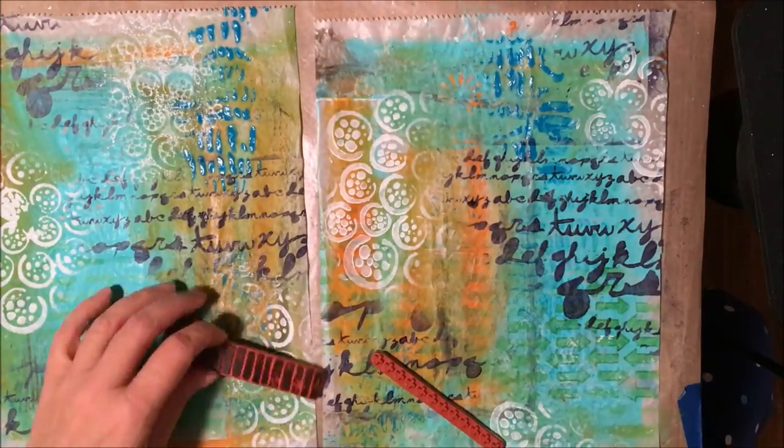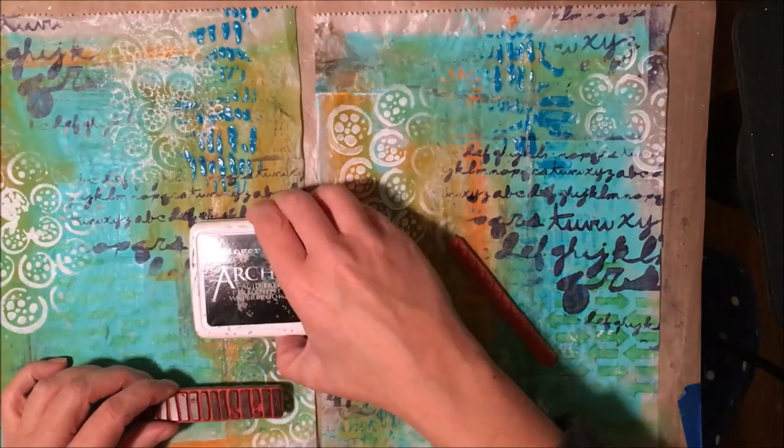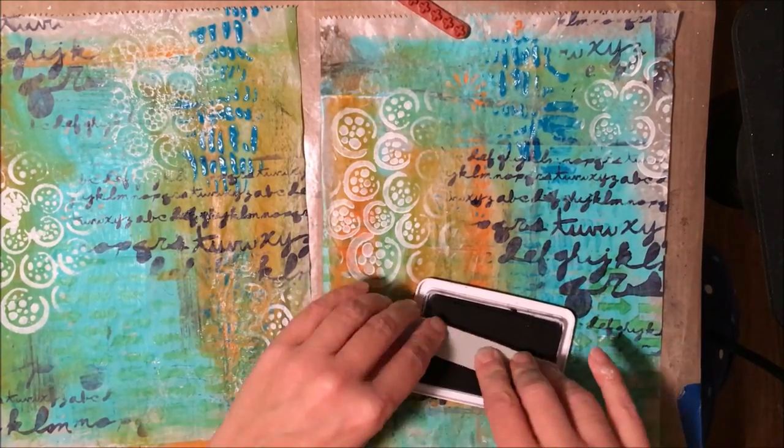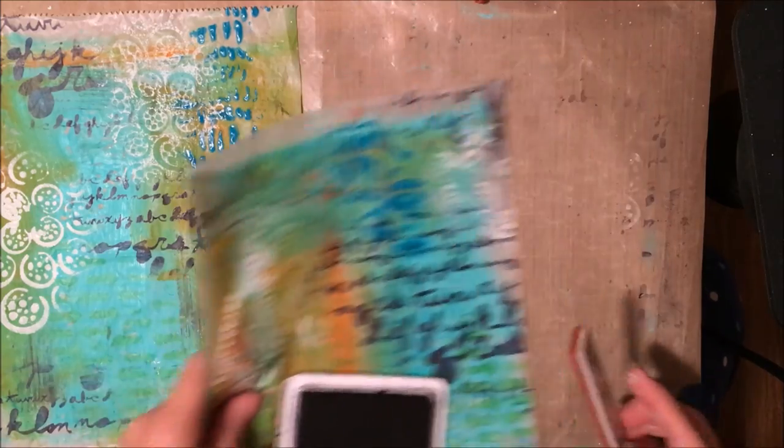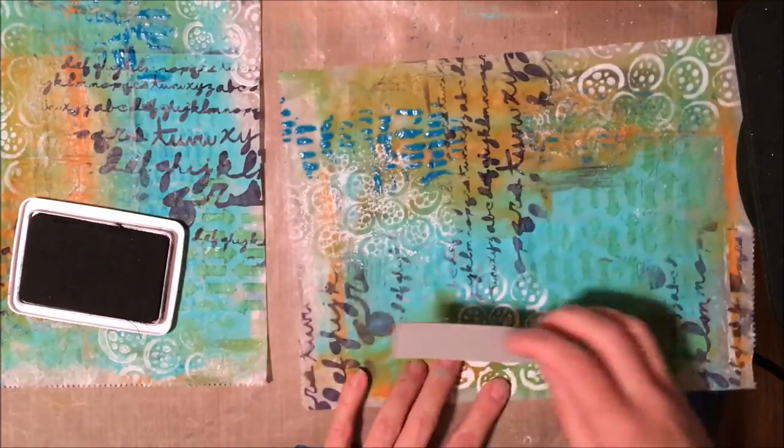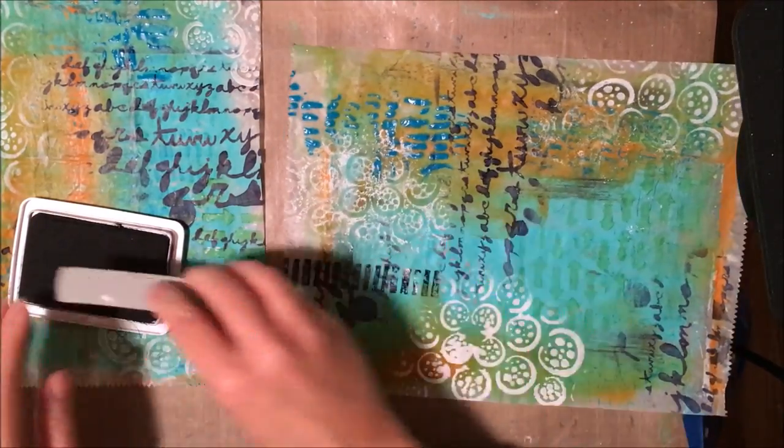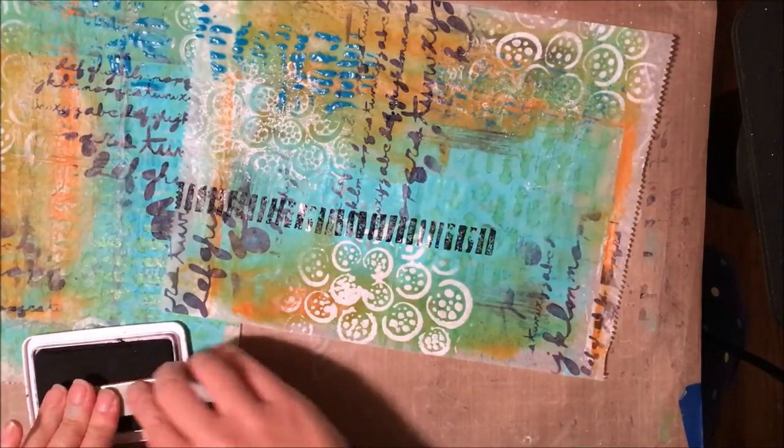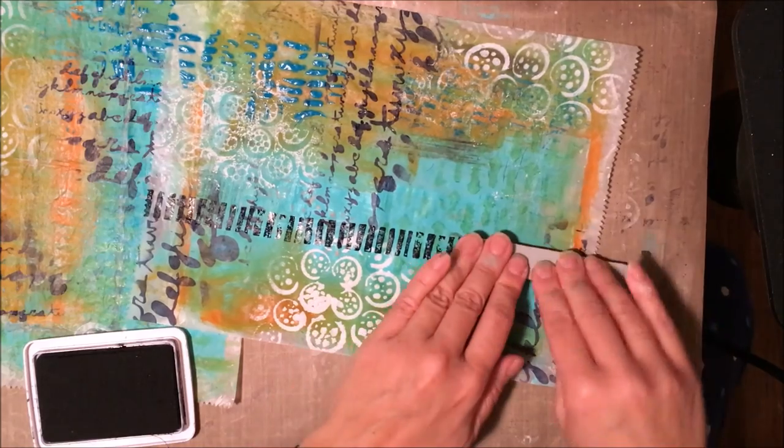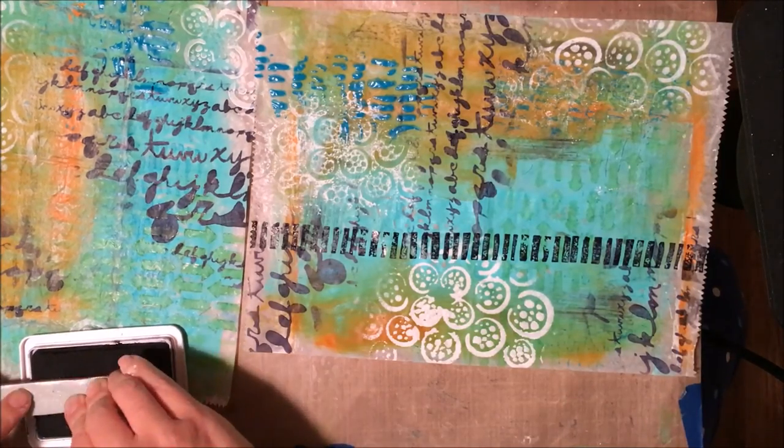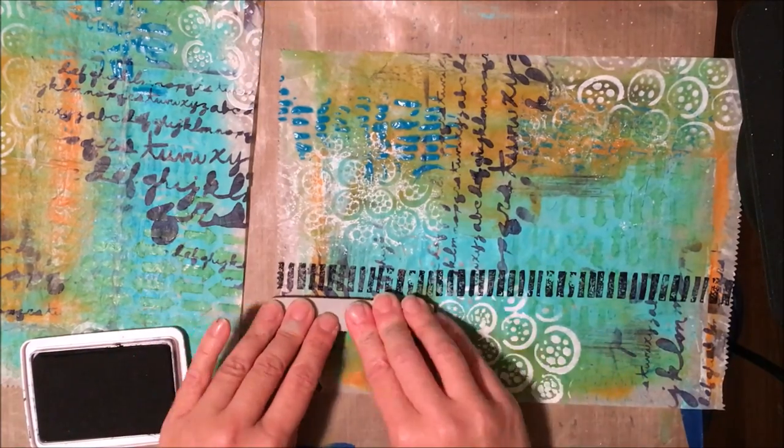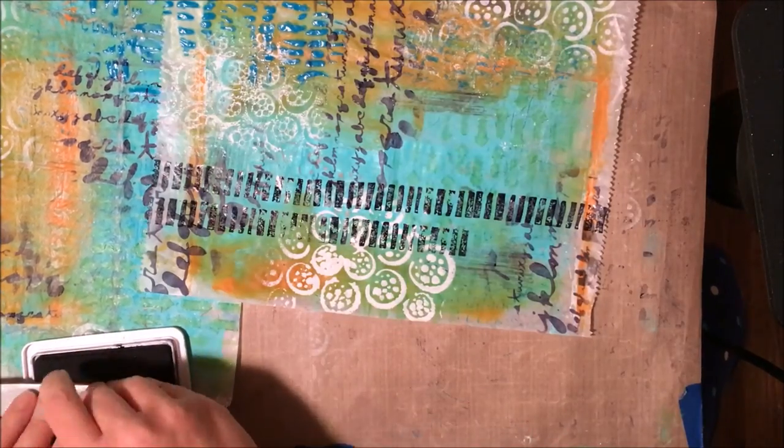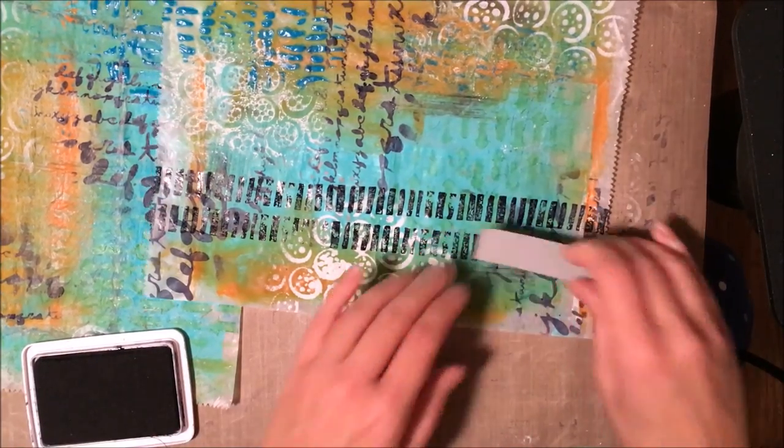So now I'm going to use some stamps. These are also by Julie Fei-Fan Balzer and I'm just using some black acrylic ink. And one of the things I really like about some of Julie's designs is it's really meant to be a repeating pattern. So it's not something you use once or twice, you know, or maybe just once on a project. It's really meant to, as I'm doing right now, create a bunch of rows or lines.